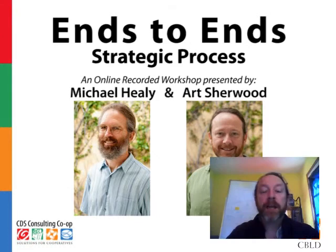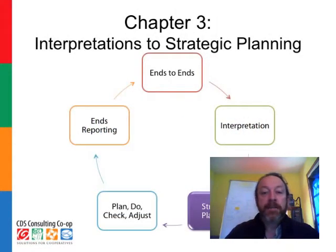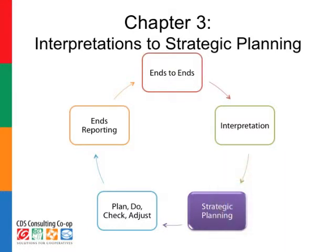Hi everyone, Art Sherwood here, and I'm back for Chapter 3, Interpretations to Strategic Plan. Chapter 3 fits into the entire ends-to-ends process right here, where interpretations are taken to the strategic planning, and ultimately strategic planning then goes on to creating action plans and reporting out the results of the ends.